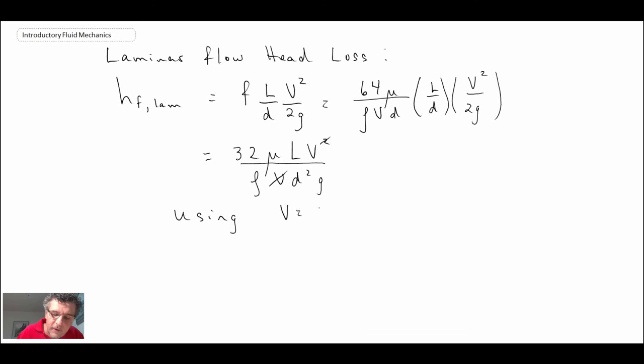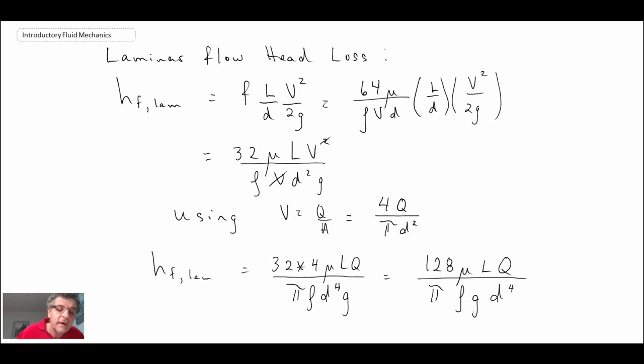We will also use the definition of the average velocity, which is volumetric flow rate divided by area. So the area of our pipe is pi d squared over 4. Making that substitution, we end up with an expression for the head loss in laminar flow. Expressing it now in terms of flow rate. So there we go.